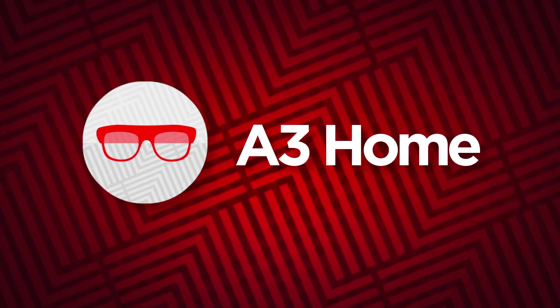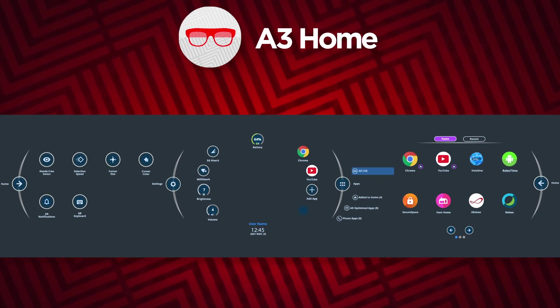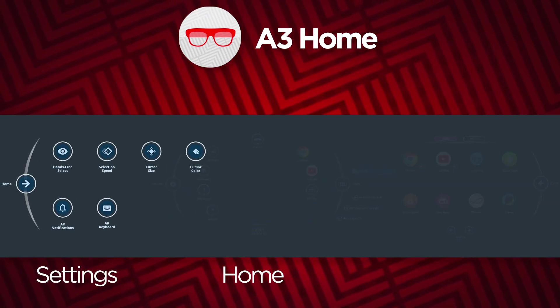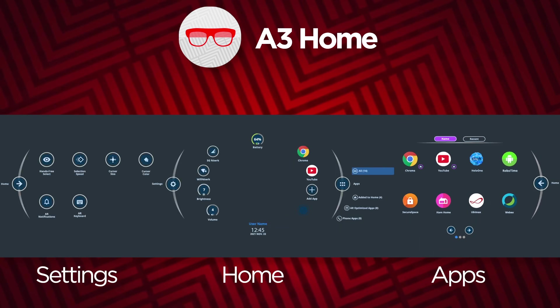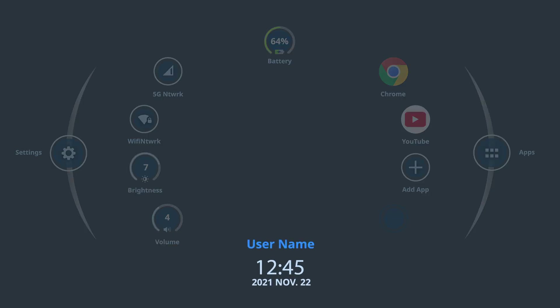The ThinkReality A3 Home interface is made up of three different screens: Home, Settings, and Apps. The main A3 Home screen contains several interactive settings and displays some helpful information. The bottom of the screen displays the date and time, and it will also display your username if you are currently logged in.